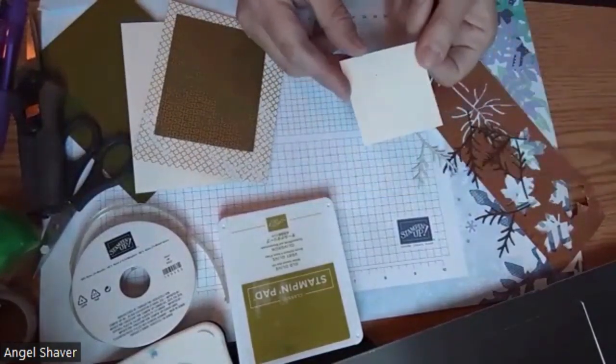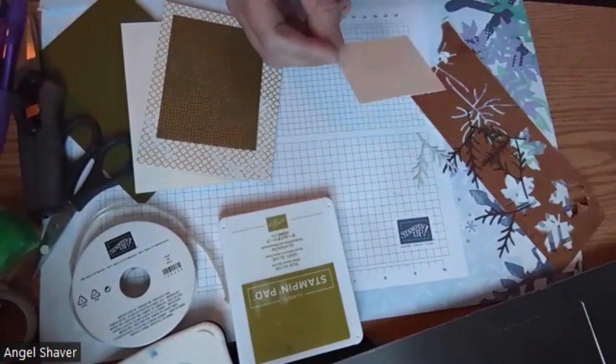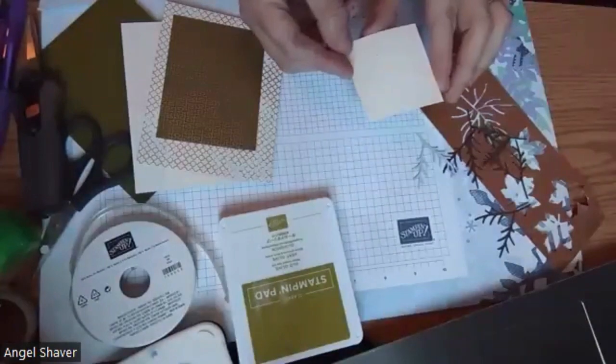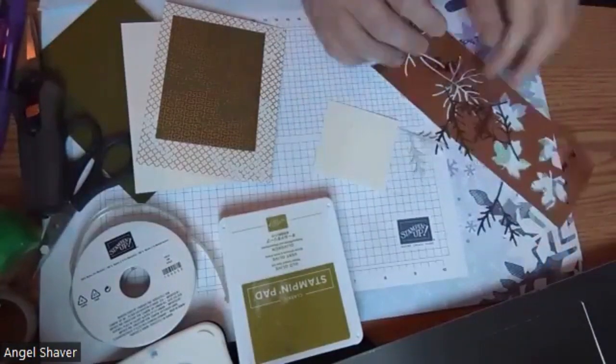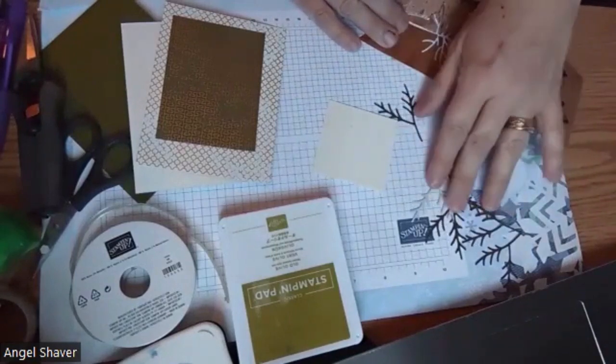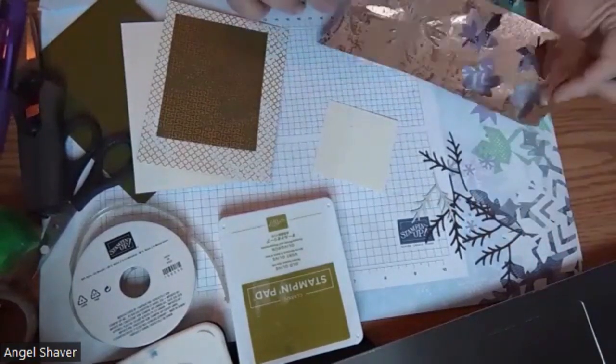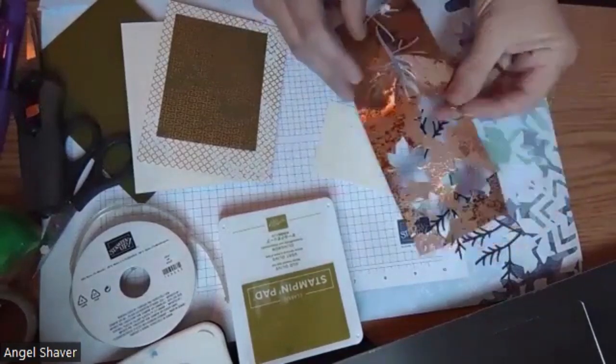And then a 2.5 inch square of very vanilla that we will be using for our stamping and to put our dies on. I've already cut out some dies in early espresso, and we will be cutting a couple more with the oxidized copper.